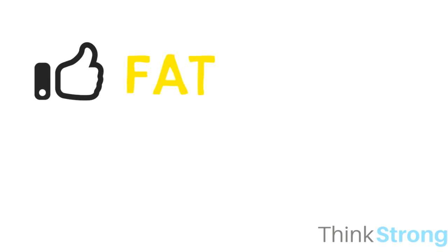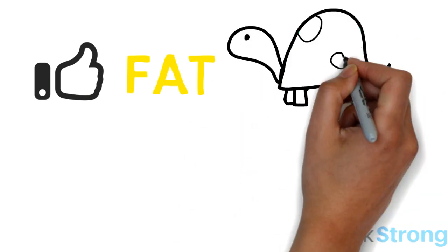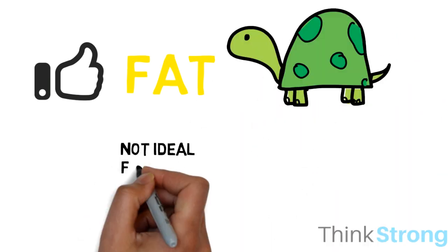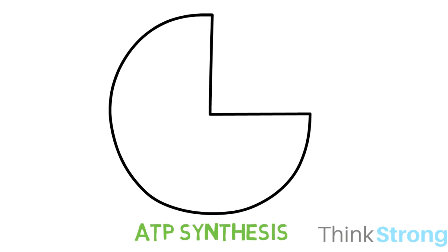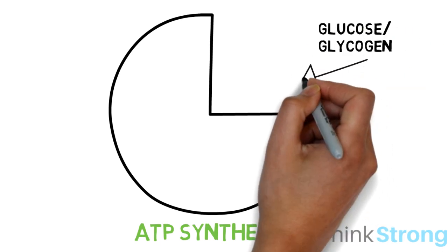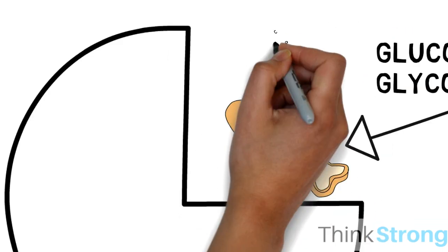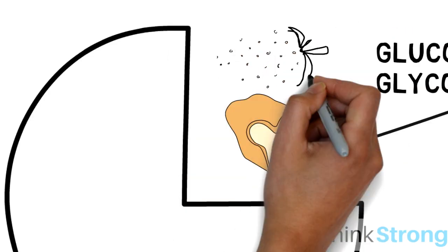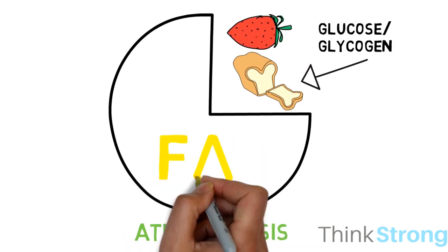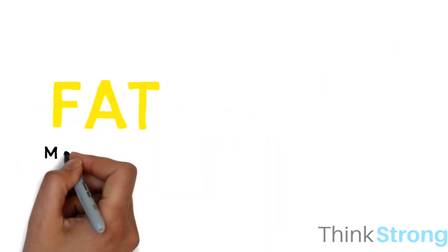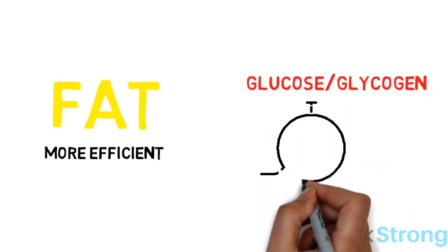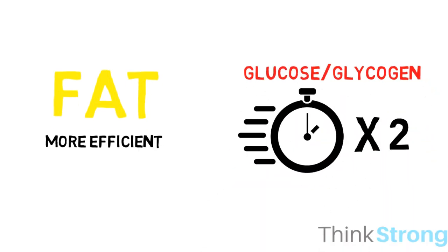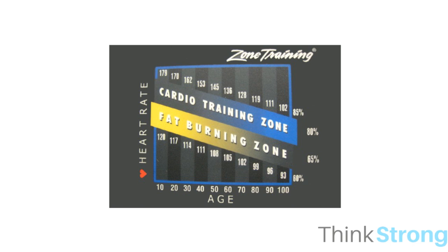The most ATP can be made from fat metabolism, but this process is very slow and therefore not ideal when working at a moderate to higher intensity. The same amount of glucose and glycogen, which comes from carbohydrates, only provides about a quarter of the ATP compared to the synthesis from fat. While fat is more efficient at creating ATP, burning glucose or glycogen is roughly twice as fast. This is where the fat burning zone idea comes from.